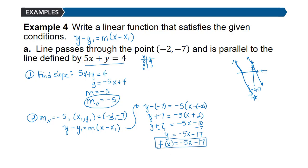We can verify: f(negative 2) equals negative 5 times (negative 2) minus 17, which is 10 minus 17, or negative 7. The point satisfies the equation, confirming it is correct. To recap: find the slope from the given line, recognize the parallel slopes are equal, then use point-slope form with the given point.